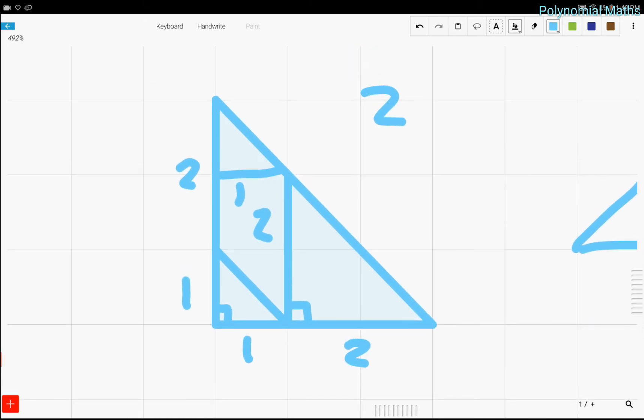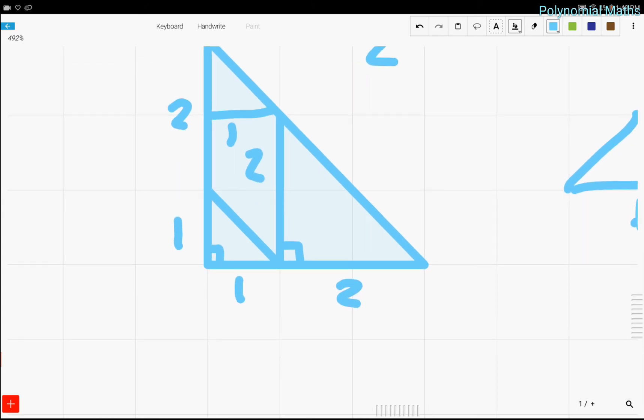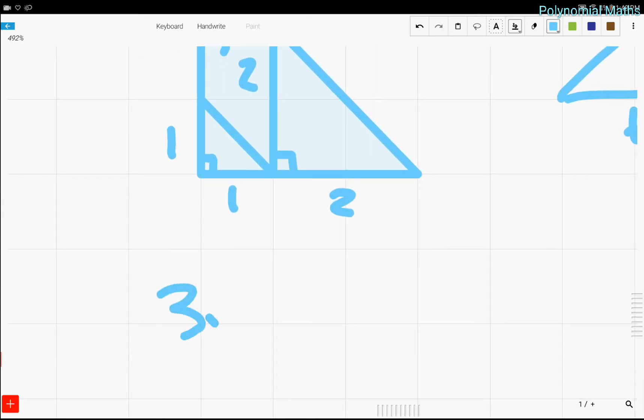Now we just have to find the area of the whole triangle. We can just use our formula because it's a right triangle. So 3 times 3, base times height over 2, is equal to 9 over 2.